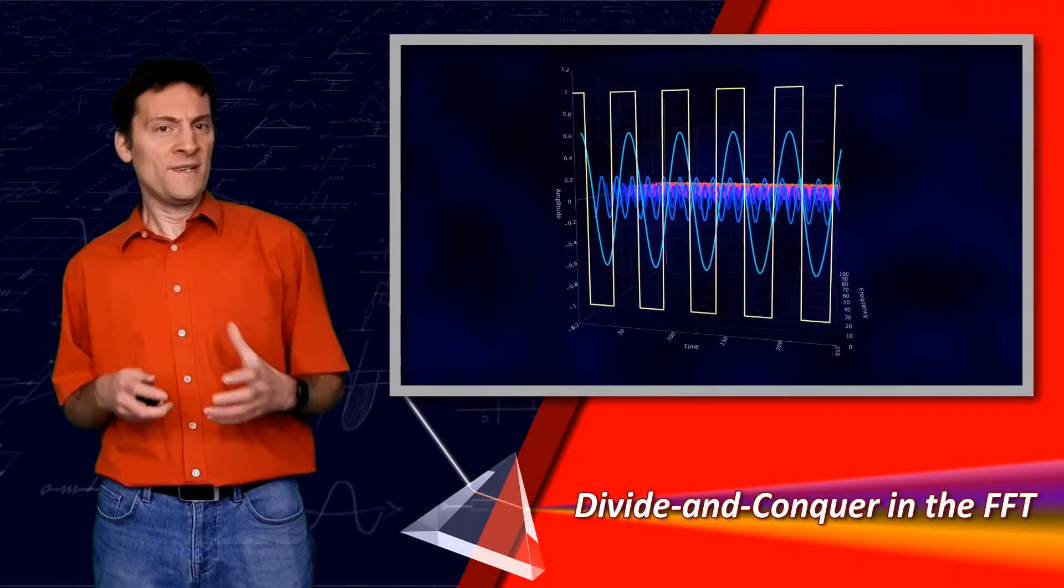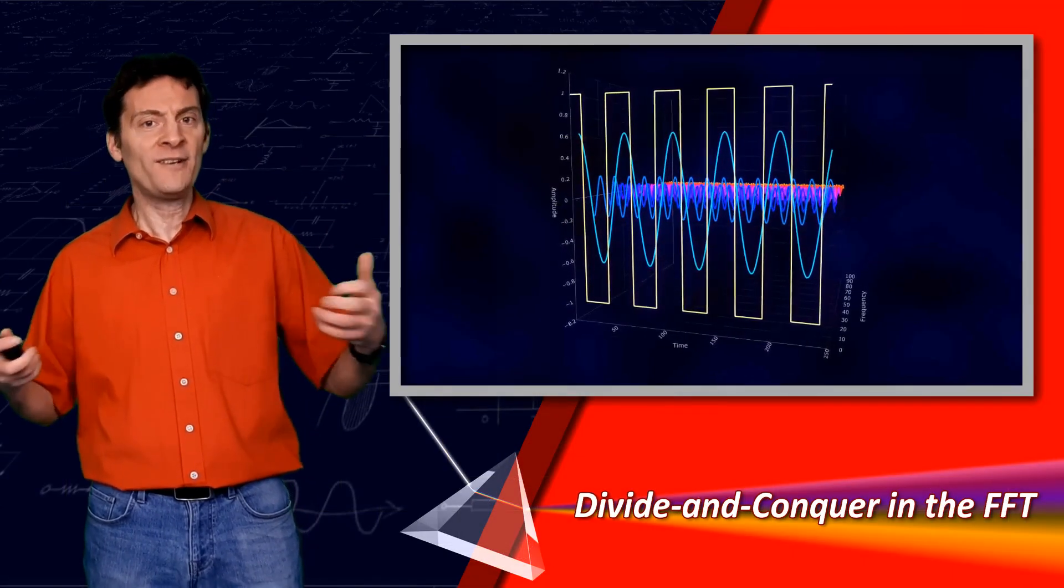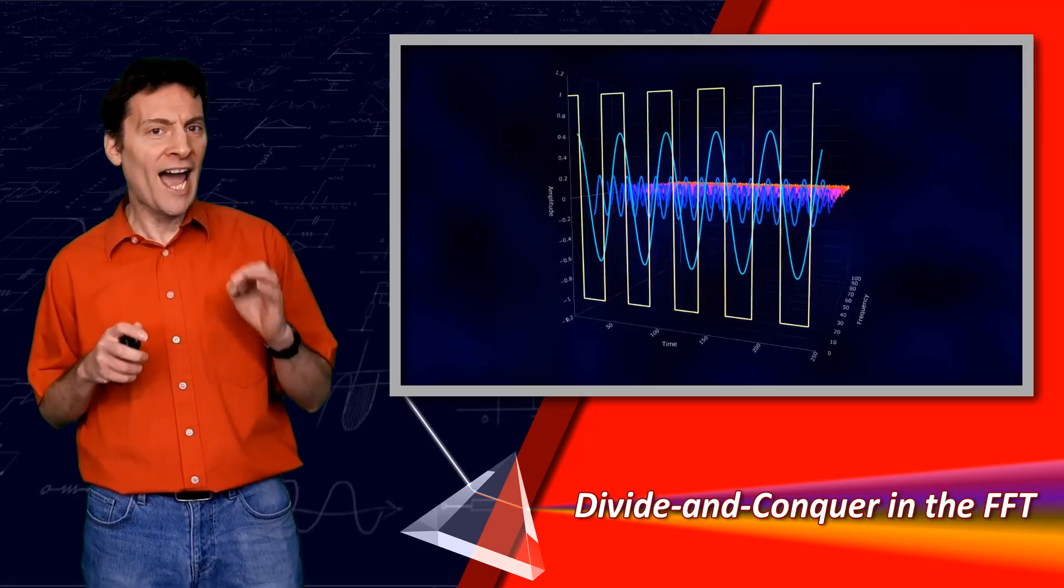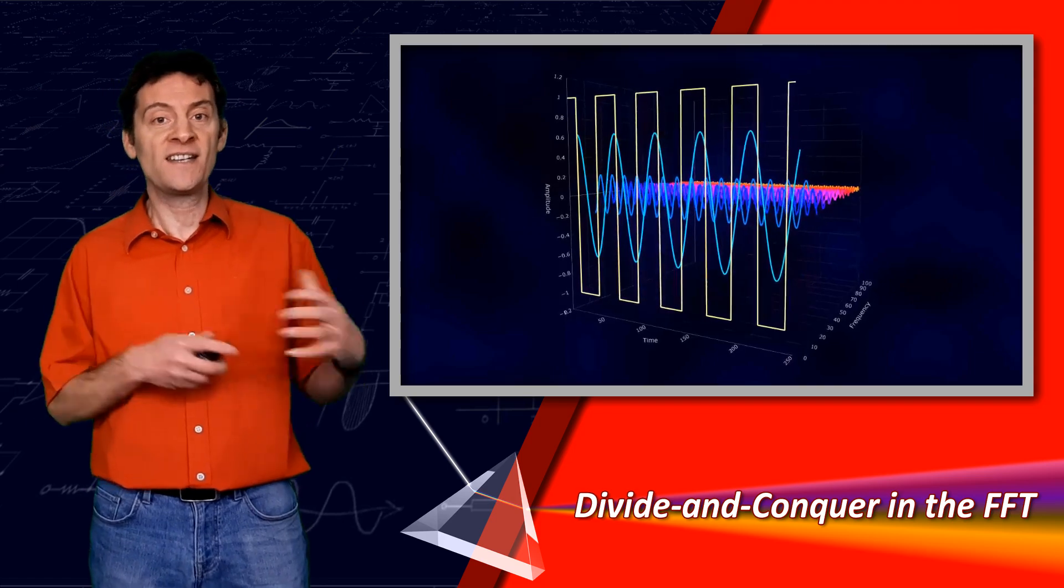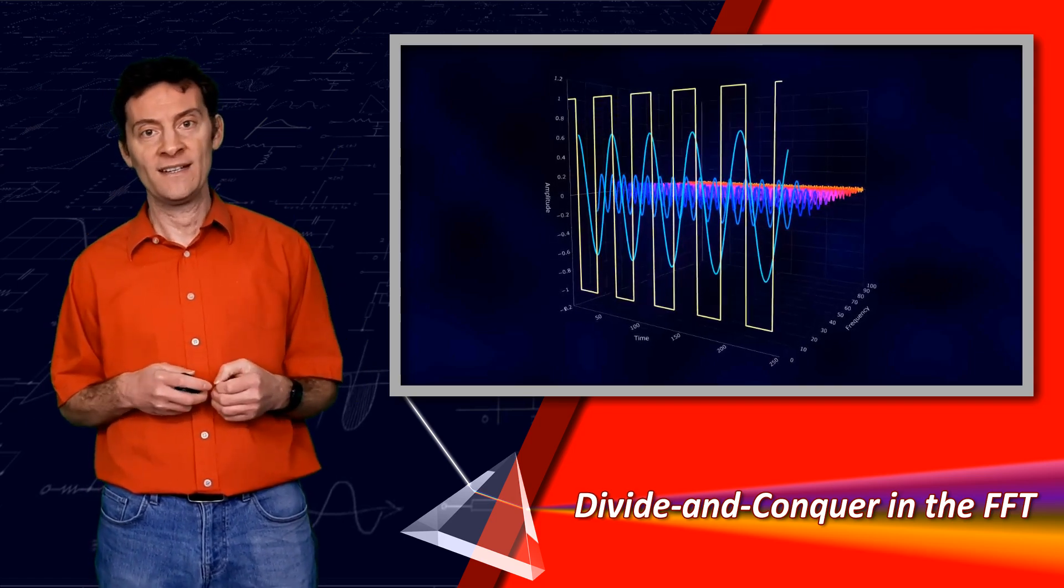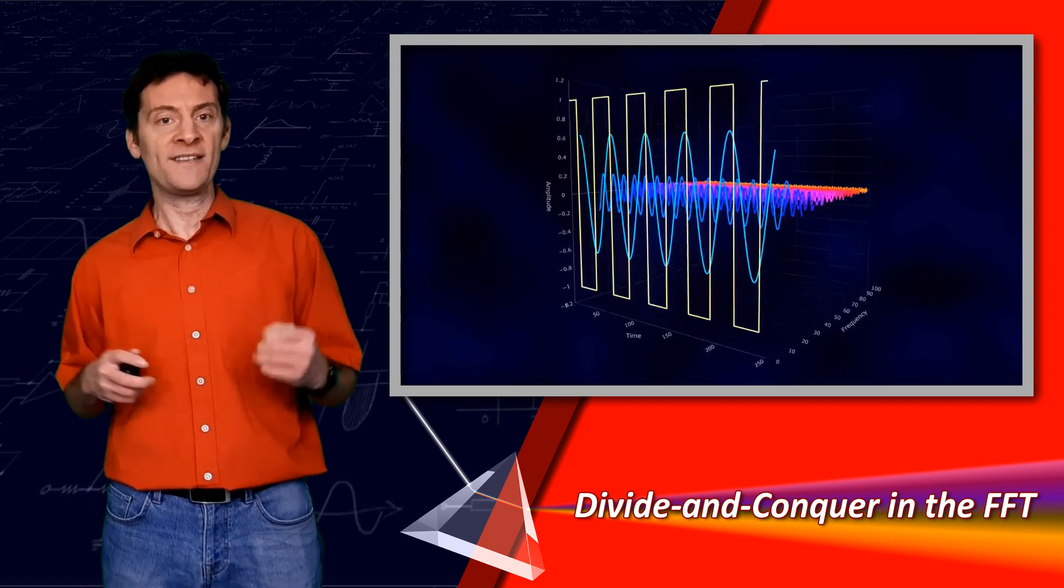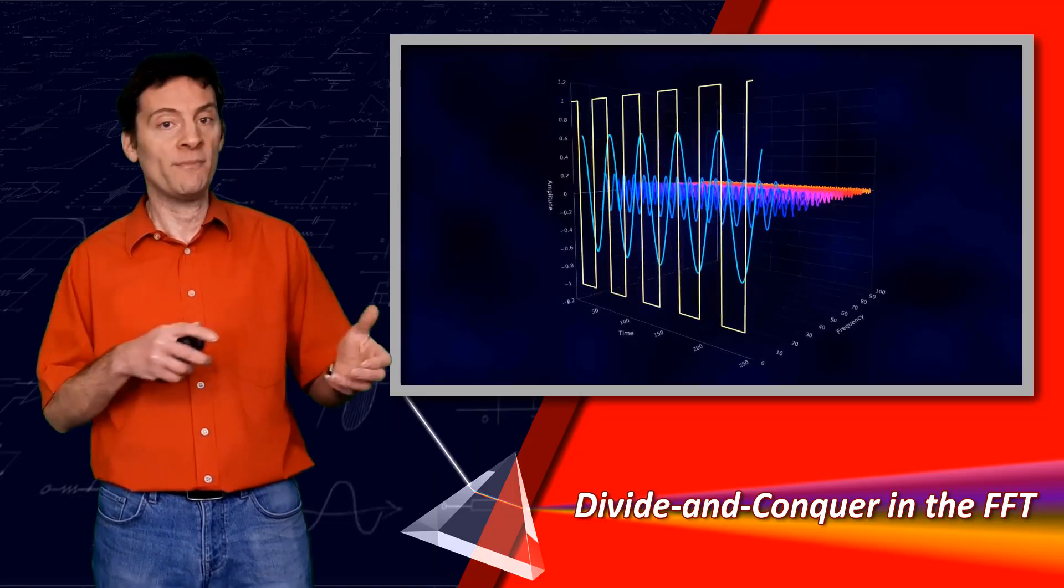In the Fourier transform, a signal is broken down into its frequency components by measuring how much it correlates, how similar it is, to cosine and sine waves at each frequency. This is done by multiplying the signal by these waves and summing the results.